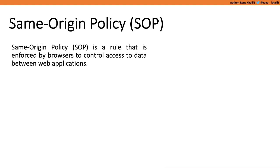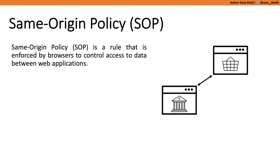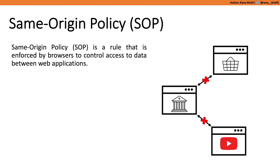Before we discuss CORS vulnerabilities, we need some fundamental knowledge about how different web applications interact with each other. The first concept is the same origin policy, or SOP. The same origin policy is a security mechanism enforced by browsers to control data access between web applications. If you've got a banking application and a shopping application, by default the interaction between these two applications is limited — the banking application can make requests to the shopping application such as submitting a form, but it cannot read the response.